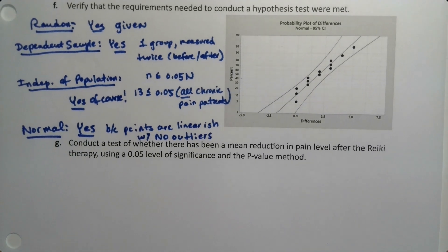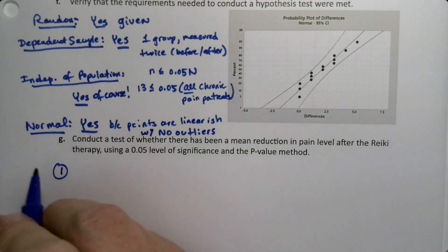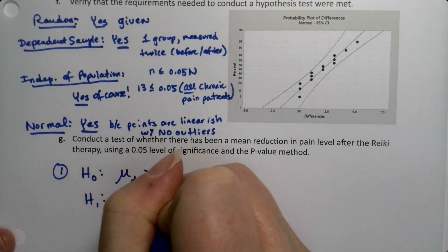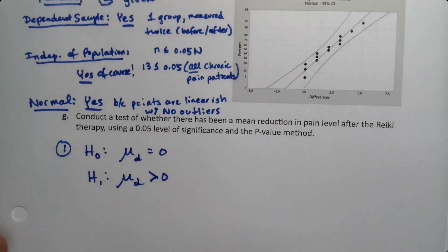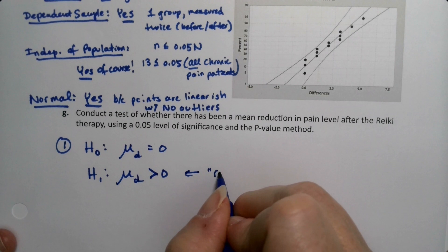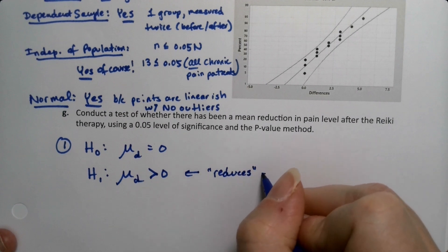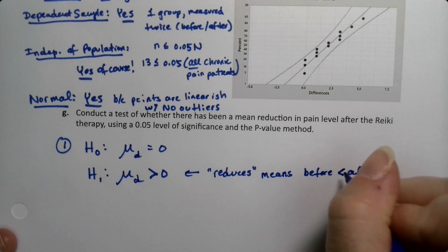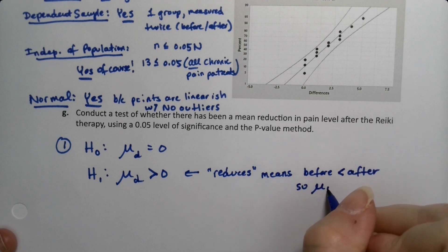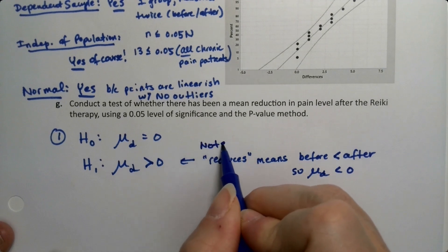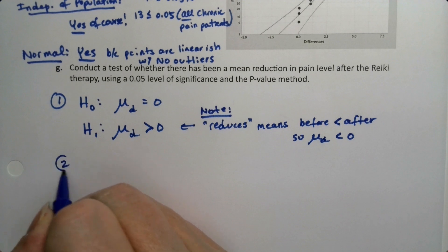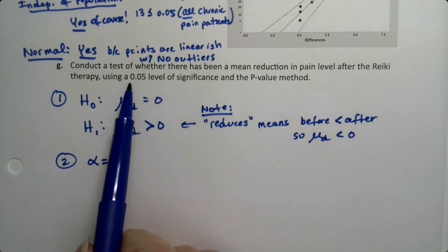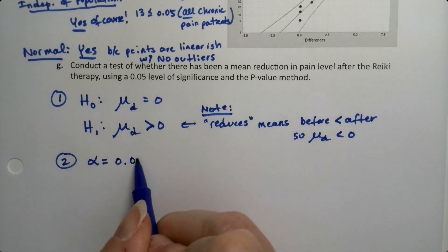Now let's run the test, our lovely six-step process. We start with step one, H0, which we actually already did because we had a discussion on the previous page of why it must be a greater than. Again, reduces in this case means before is less than after. That's just a note. You don't have to write that in. Alpha is our probability of a type one error, also known as the level of significance. Everybody loves step two. Step two is wonderful.